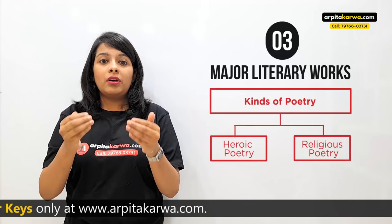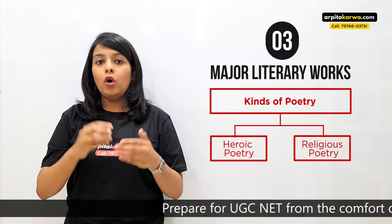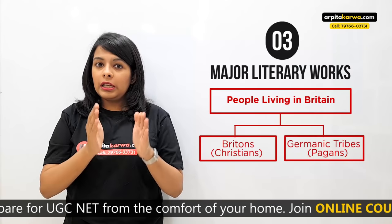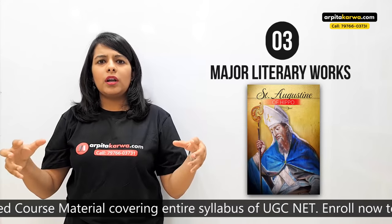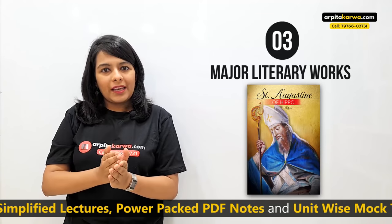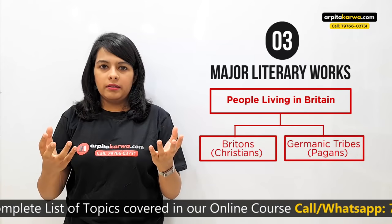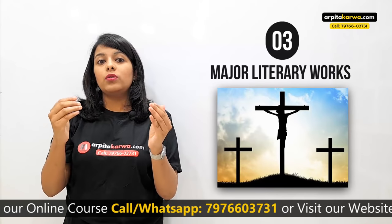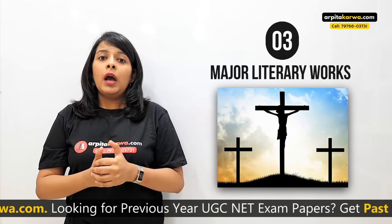The other kind of poetry found in Old English literature is Christian or religious poetry, written by the original Brythons. The Brythons converted to Christianity because during the 5th century a man called Saint Augustine tried to convert all of Europe into Christianity. They started believing in Jesus Christ and wrote poetry on Christian ideals. The image of the cross was very dominant in their poetry, and one such poem is Dream of the Rood.